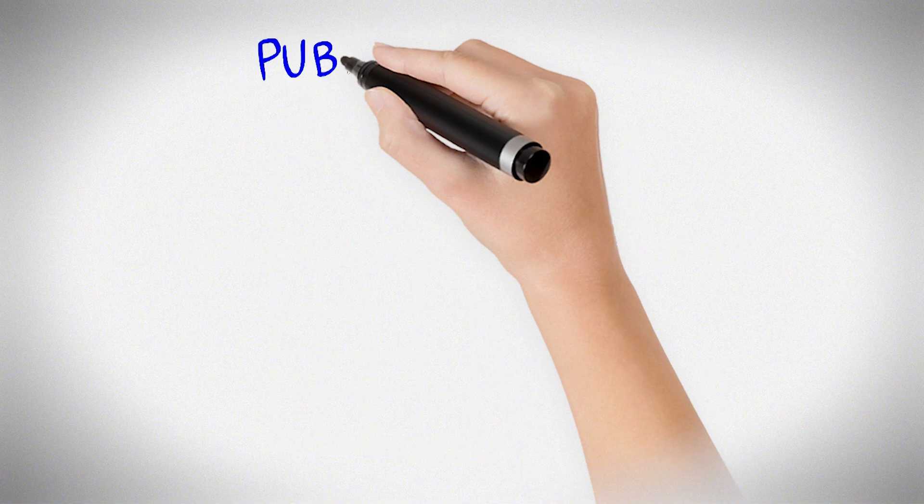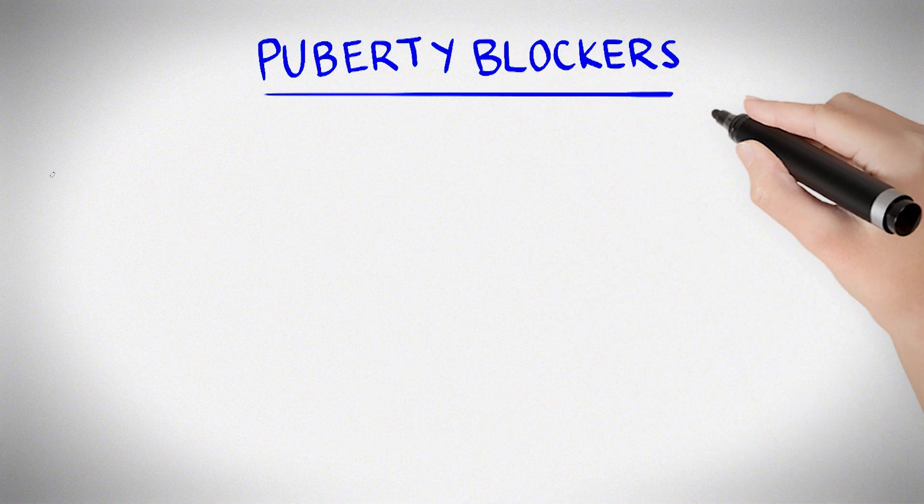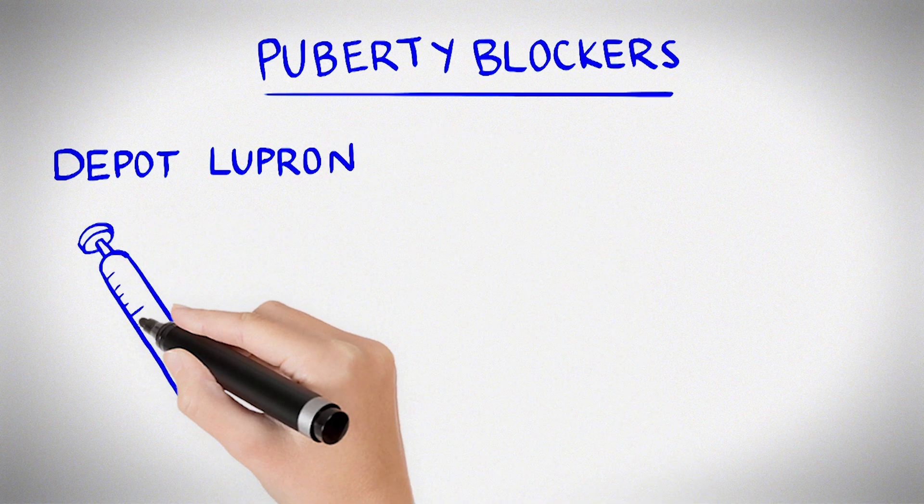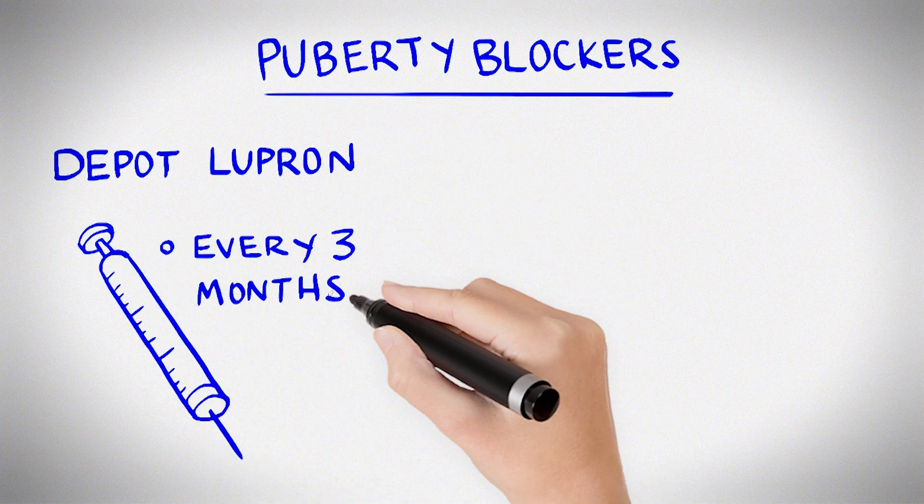How do I take the medicine? Puberty blockers come in different forms. Depo-Lupron, also called Leuprolide, is an injection that you come into clinic for every three months.